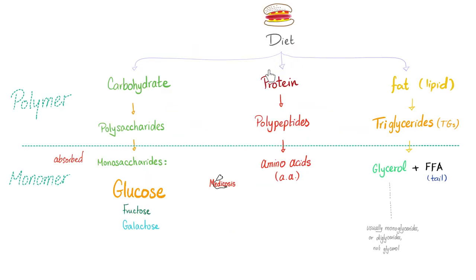As you know, when you eat proteins, they become polypeptides, oligopeptides, dipeptides, and then amino acids.